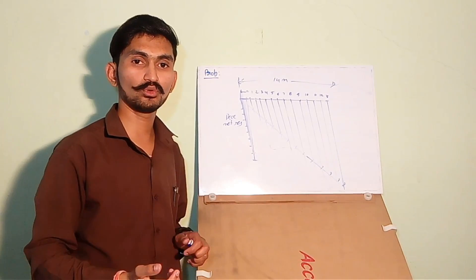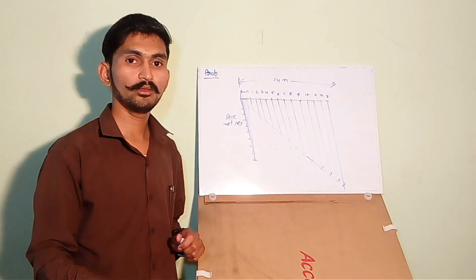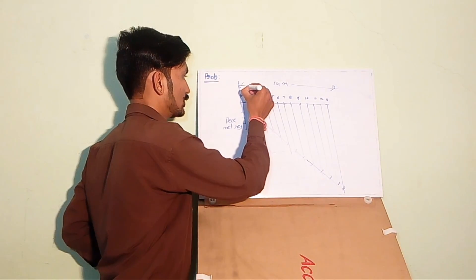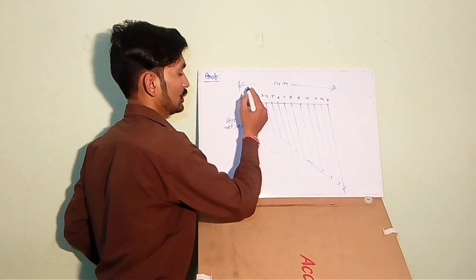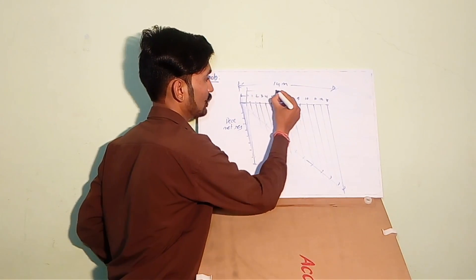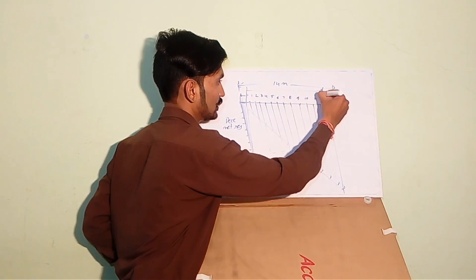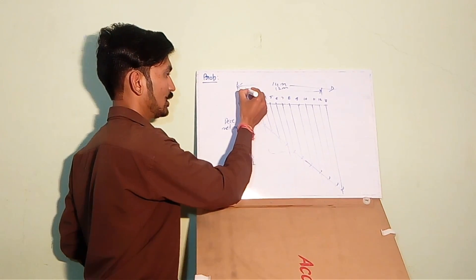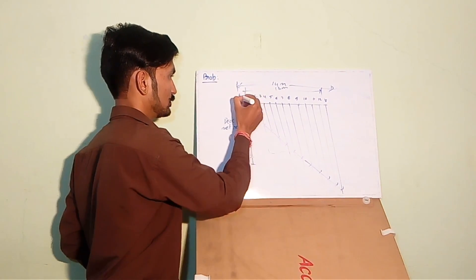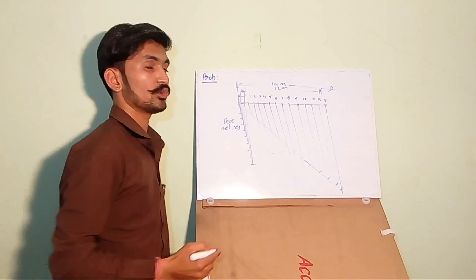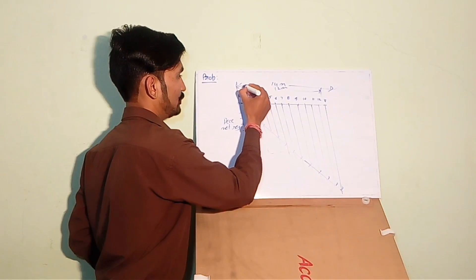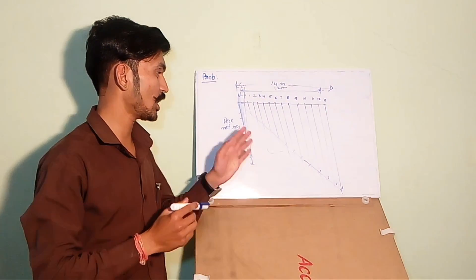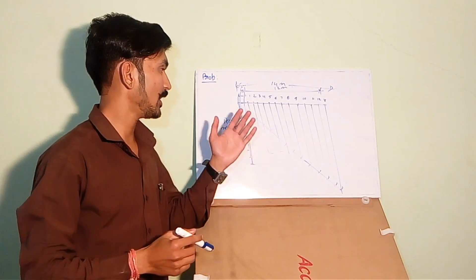Now, if you want to show 12.5, meaning 12 meters and 5 decimeters, you will start from this point 0. Count 12 till here - this is 12 meters. And count 5 from here on the other side till this. This is 5 decimeters. So this line will show 12.5 meters. This is how we can draw a scale.